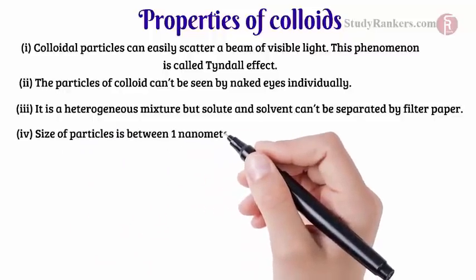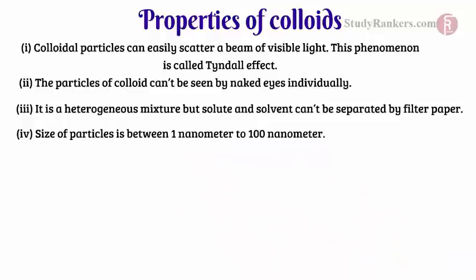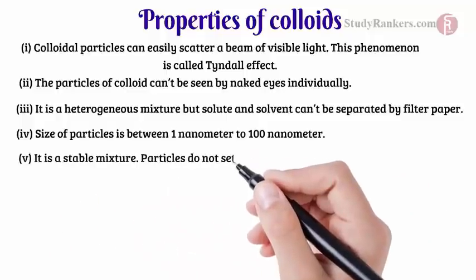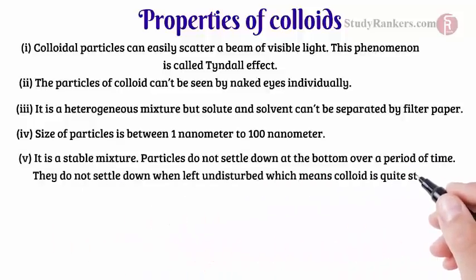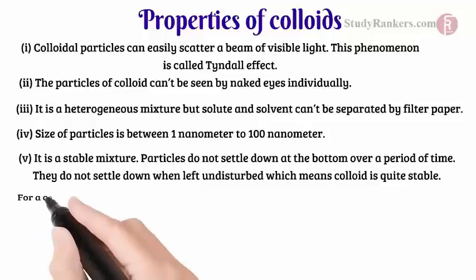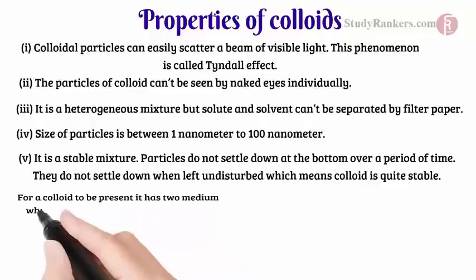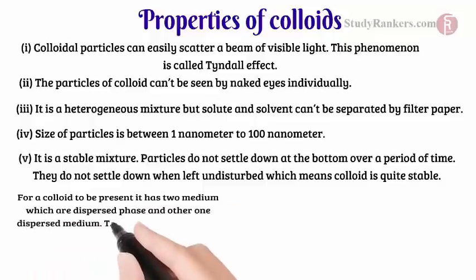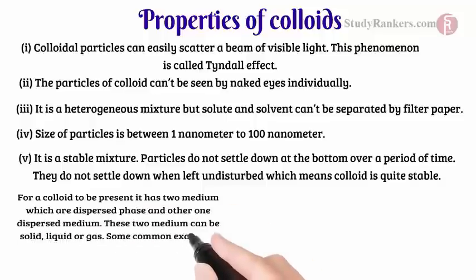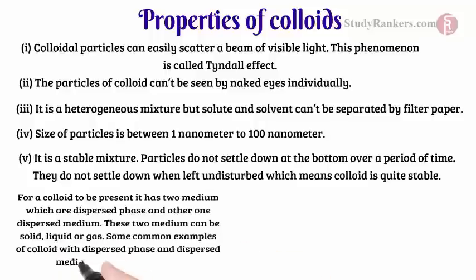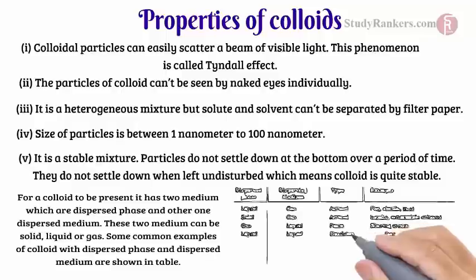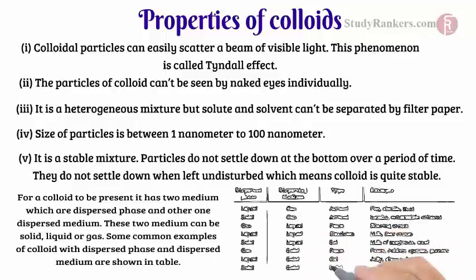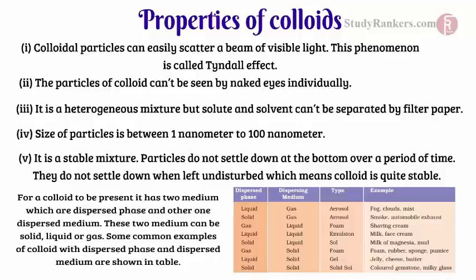A colloid is a stable mixture — particles do not settle down at the bottom over a period of time. They do not settle down when left undisturbed, which means a colloid is quite stable. For a colloid, it has two components: dispersed phase and dispersed medium. These two components can be solid, liquid, or gas. Some common examples of colloids with dispersed phase and dispersed medium are shown in the table.